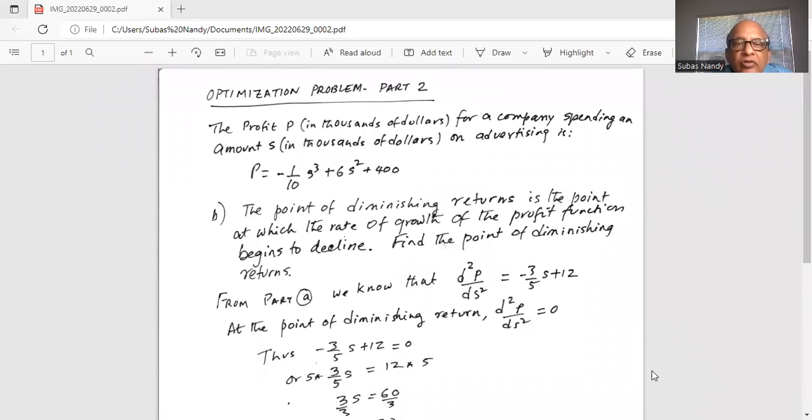The profit P, in thousands of dollars, for a company spending an amount S in thousands of dollars on advertising is given by P = -1/10 S³ + 6S² + 400.